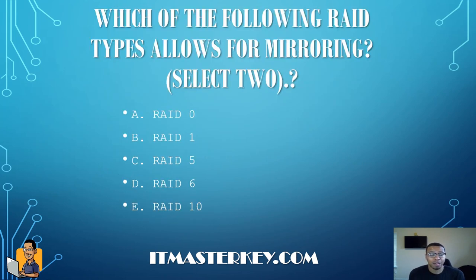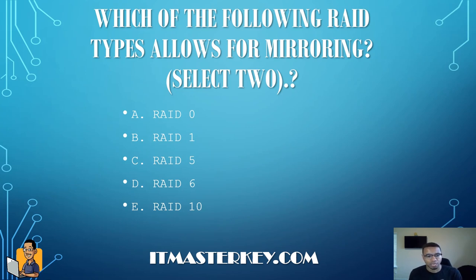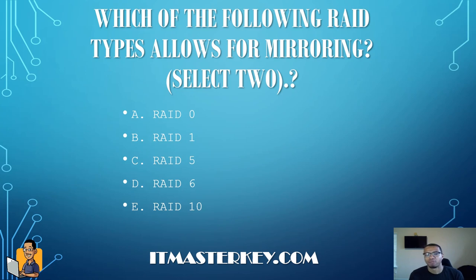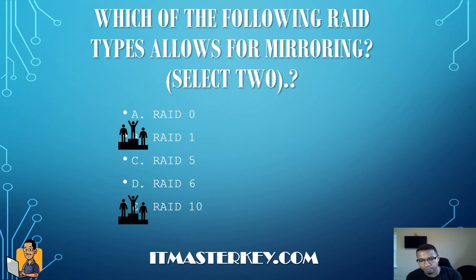Next: which RAID type allows for mirroring? Mirroring means you have the exact same data on several disks — just like looking in a mirror, it's an exact copy. With RAID, you can have striping or mirroring. Striping means the data is split; mirroring means an exact copy exists on several disks. Out of the RAID levels, RAID 1 and RAID 10 provide mirroring.